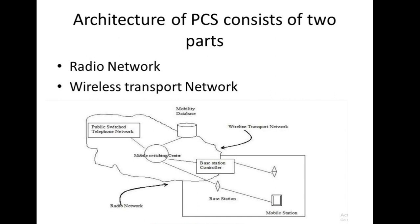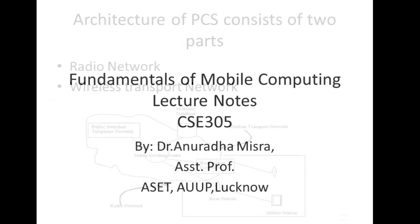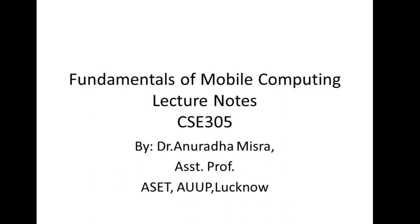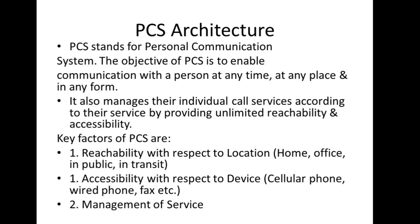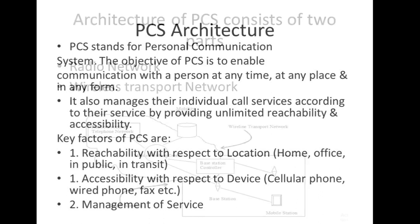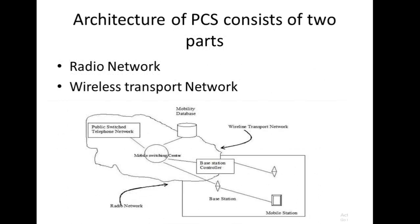The cell is controlled by BSC which are connected to MS, that is the mobile systems, through base stations. The BSCs are connected to MSCs by landlines. You might have seen that even to establish mobile communication you need to establish communication between the base stations using some wired network, not the wireless ones but the wired networks. What wireless transport network does? This is the second part of the architecture of the PCS.